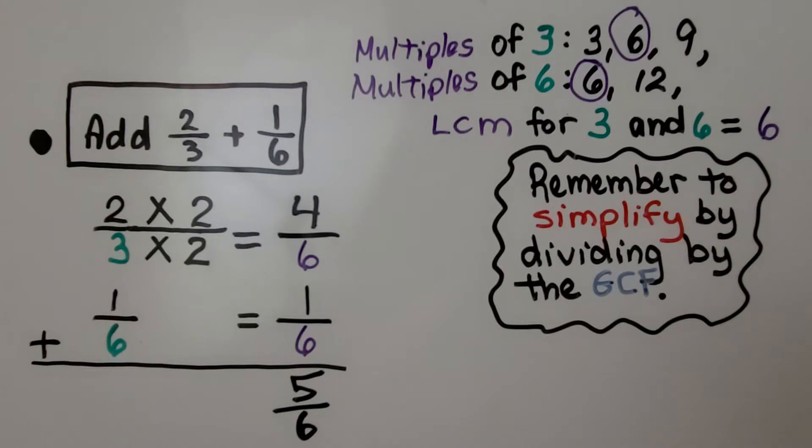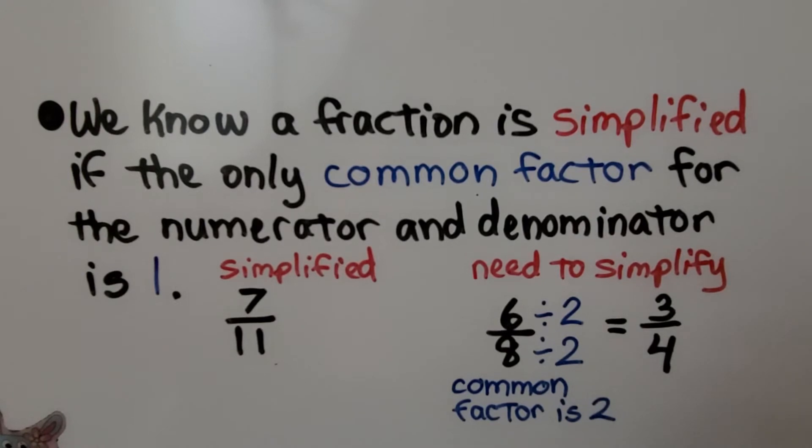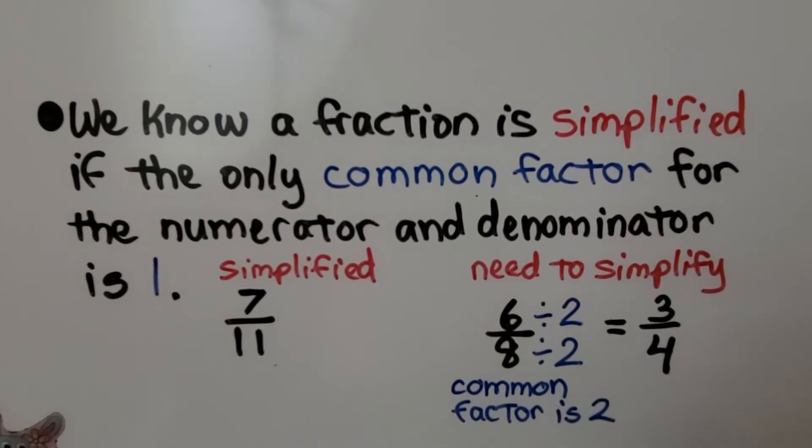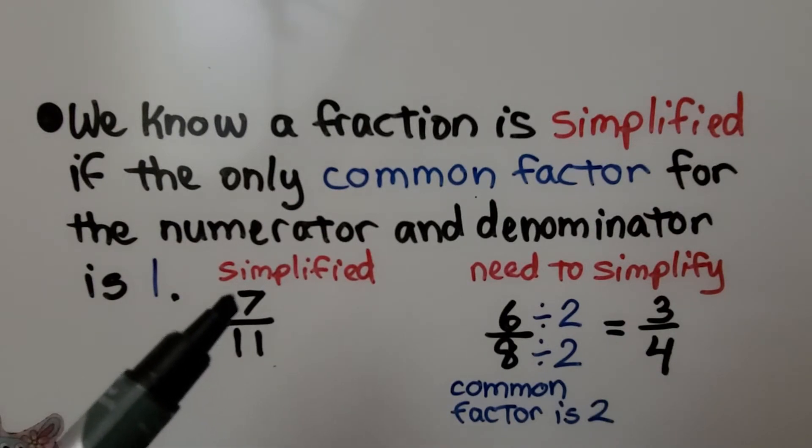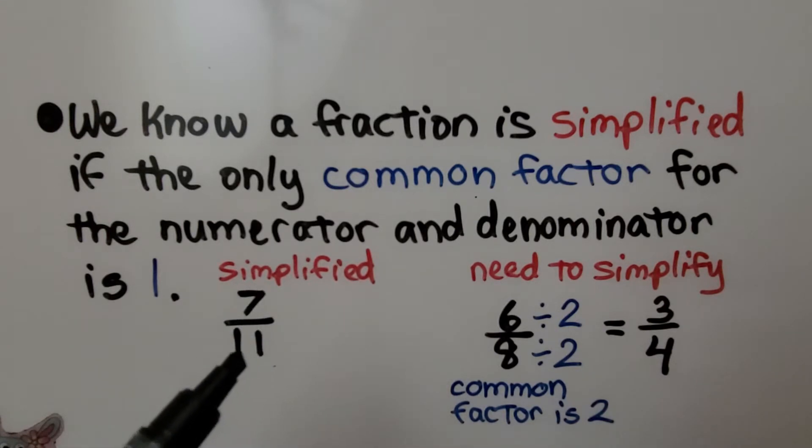Remember, to simplify, we divide by the greatest common factor for the numerator and denominator. But this is simplified. We know a fraction is simplified if the only common factor for the numerator and denominator is 1. Here we have 7/11. 7/11 is simplified. The factors for 7 are 1 and 7. The factors for 11 are 1 times 11. The only common factor they have is 1. So that's simplified.